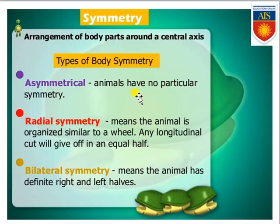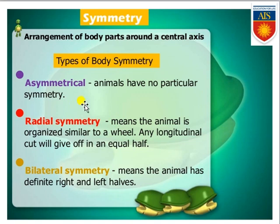The next feature is symmetry — the arrangement of body organs around a central axis in a geometric manner. Body symmetry is of three types: asymmetrical, radial symmetry, and bilateral symmetry. Asymmetrical means there is no symmetry; Porifera or sponges are asymmetrical organisms. Radial symmetry is found in spherical or round organisms like Cnidaria and Ctenophora — if you cut along the radius you get two equal halves. Bilateral symmetry is where the body is divided along a longitudinal plane giving left and right halves.